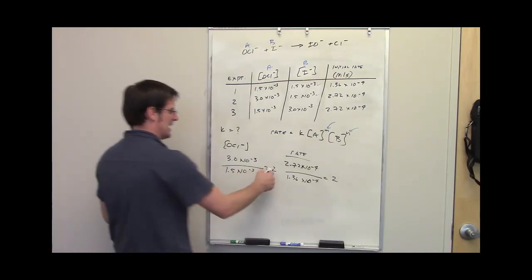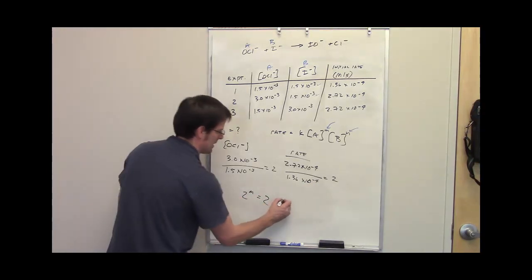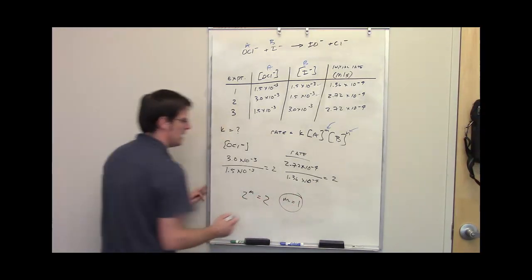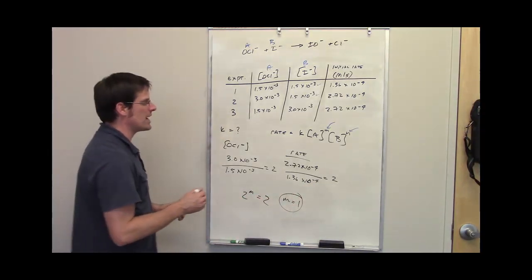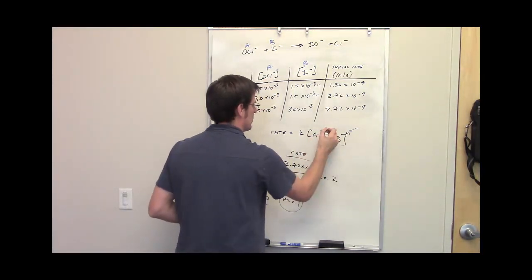So I take this number, raise it to the m, and set it equal to that number. What does m come out to be? M comes out to be 1. So 1 is the reaction rate order with respect to component A, the hypochlorite anion. I can now replace my m with 1.